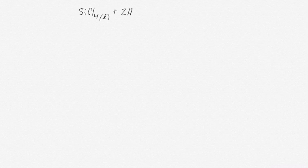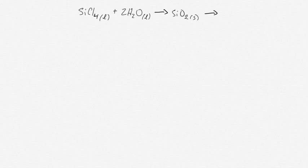The first way is to do a rearrange-and-add method, where you rearrange and add a bunch of different individual equations together to get an overall equation. And the second method is a summation method, which we'll talk about later.